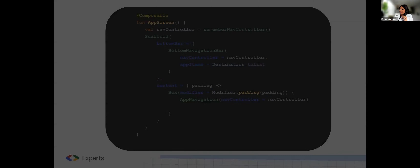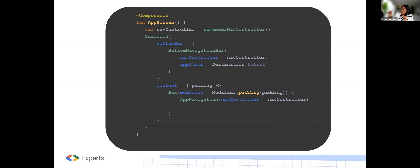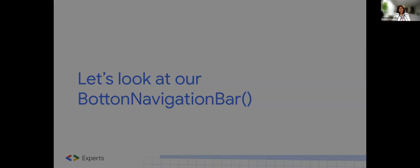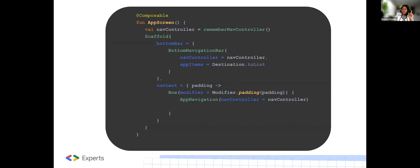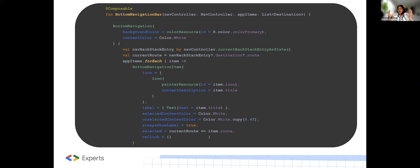We also need to look at the bottom navigation composable function. When we create this composable function BottomNavigationBar, we pass in a NavController. We also need to pass the app items — this is the companion object block we created inside our destination, which loops through our destinations as a list. The BottomNavigation itself is provided to us by the navigation components. We handle our backstack entry using currentBackStackEntryAsState.